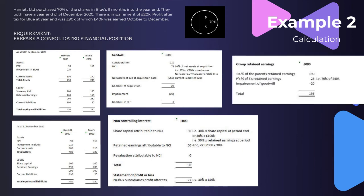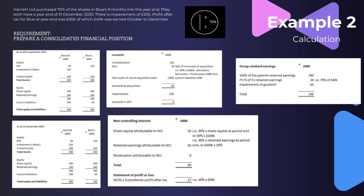For group retained earnings: 100% of Harriet's retained earnings is 190k. Then we take Harriet's 70% share of Blue's post-acquisition retained earnings — 70% × 40k = 28k. The reason we use only 40k is because that's the profit earned October to December, after Harriet took control. They're not entitled to retained earnings earned before acquisition. Then we deduct impairment of goodwill of 20k, giving total group retained earnings of 198k.